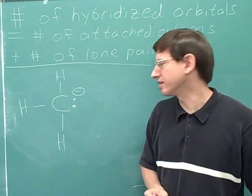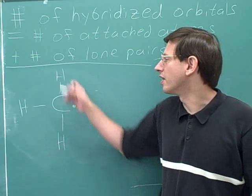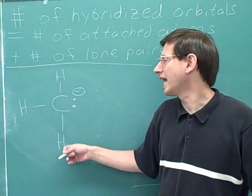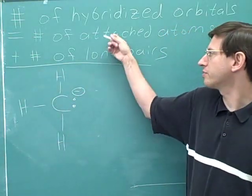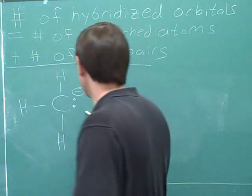Here we have a carbanion. What is the hybridization of this carbon? There are three attached atoms and one lone pair. 3 plus 1 is 4, so there should be four hybridized orbitals.